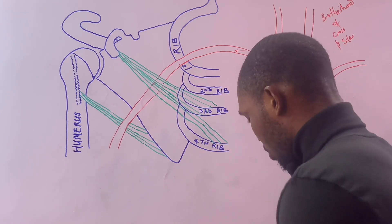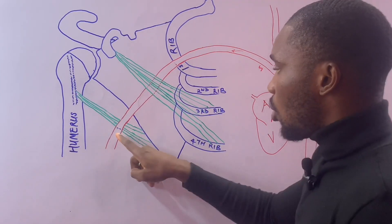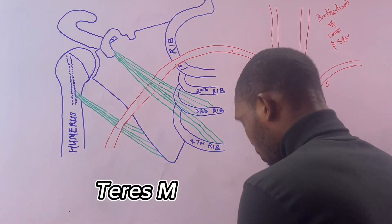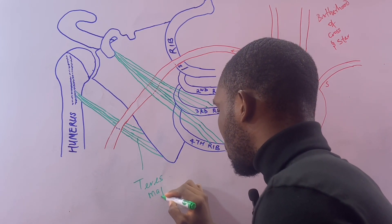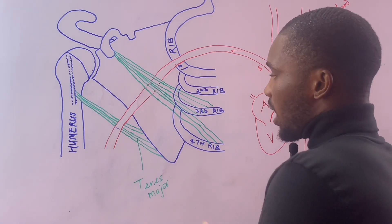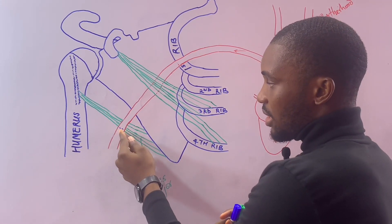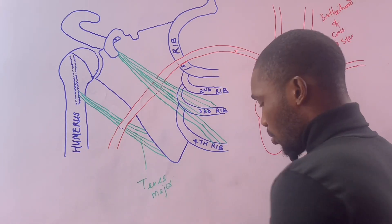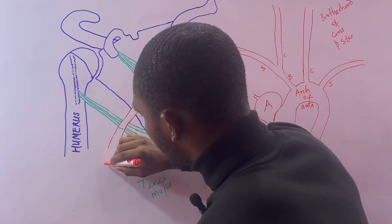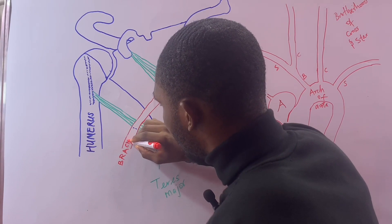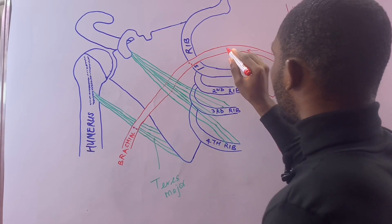So we have the axillary artery from the outer border of the first rib to the lower border of the teres major. The teres major has an upper and lower border, and at that lower border the axilla ends and the axillary artery ends, changing its name to the brachial artery.